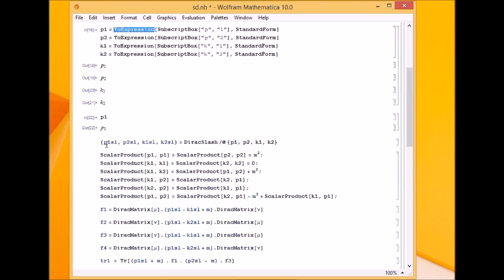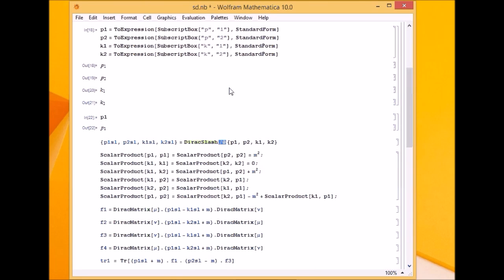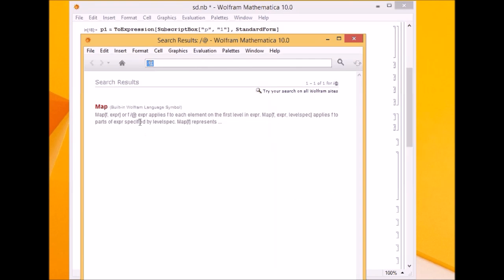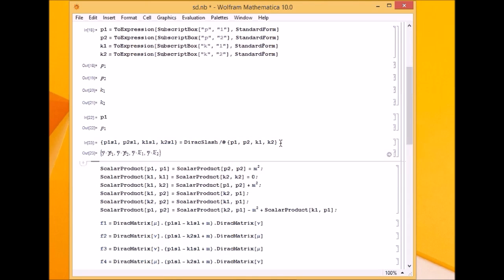Now when I write p1s1, I want it to be slash notation. I'm defining it as p1 slash. p1 slash is what? p1_mu gamma^mu. That is done by DiracSlash operator. DiracSlash is being applied to, if you remember slash at the rate is Map. So it applies to this expression. DiracSlash is applied to this list. When I run it, see, we get the Dirac slash notation, which is p1 dot gamma, p2 dot gamma, etc.